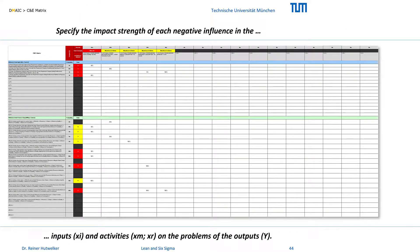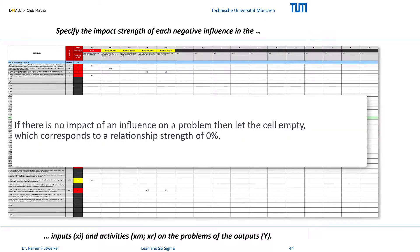The C&E matrix is very large, and it can be tiring for the experts to evaluate each cell. To facilitate this work, an empty cell means an influence strength of 0%. So you don't have to change anything in the matrix if there is no effect from an X to a Y.